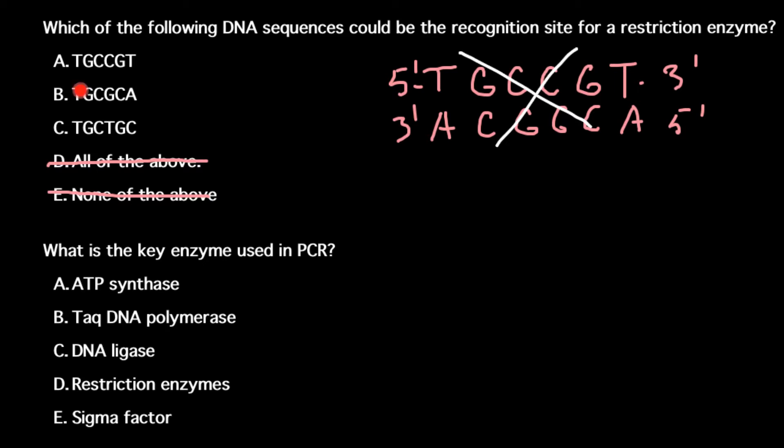Let's check the second sequence, and this is T-G-C-G-C-A. Once again, 5 and 3 prime ends. Let's build another strand of the DNA: T base pairs with adenine, thymine with adenine, guanine with cytosine, cytosine with guanine, guanine with cytosine, cytosine with guanine, and adenine with thymine.